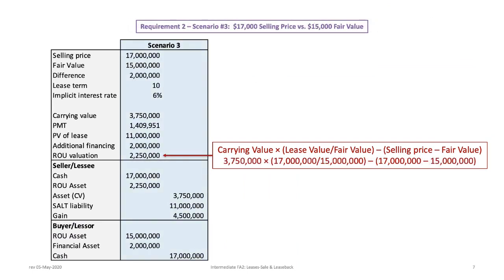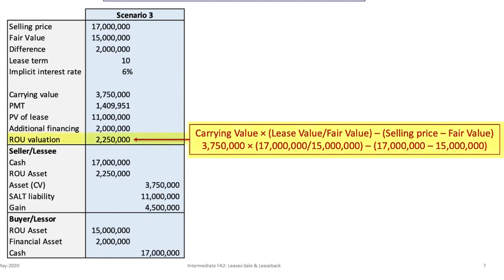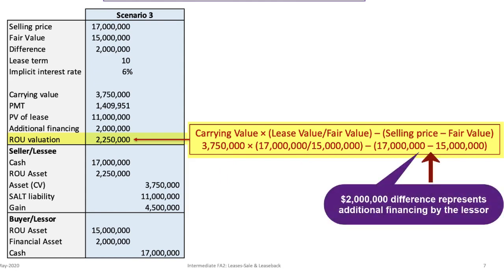Finally, let's look at scenario number three, where the selling price of $17,000,000 is greater than the $15,000,000 fair value. The carrying and lease values are the same as scenario one, and the ROU valuation is calculated similarly: $3,750,000 multiplied by $11,000,000 divided by $15,000,000, then subtract the difference between the $17,000,000 selling price and the $15,000,000 fair value — that difference is $2,000,000. The result is an ROU valuation of $2,250,000. Notice that the ROU asset does not include the $2,000,000 difference; it is considered additional financing.